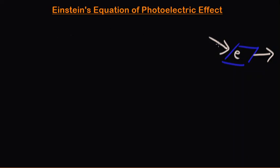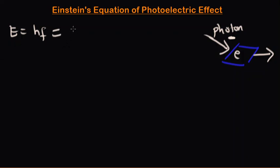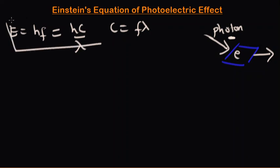Now let's look at the energy of the photon. The energy of the photon is given as E equals HF, H being Planck's constant and F being the frequency of this photon. This same equation can be transformed into Hc over lambda, where we use the relation C equals frequency times lambda. So this is the energy of the photon.